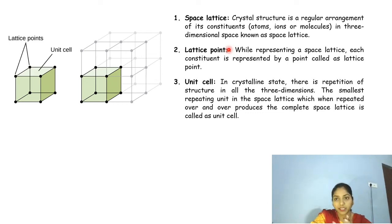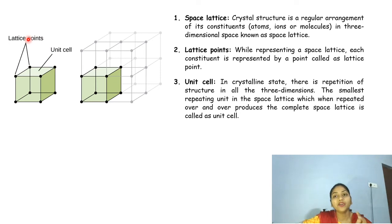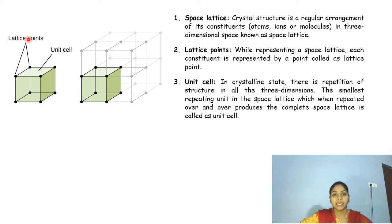Next are the lattice points. When representing a space lattice, each constituent — whether atom, ion, or molecule — is represented by a point. Those points are nothing but the lattice points. I have taken out a cube, and its constituents shown as black dots — these are the lattice points.